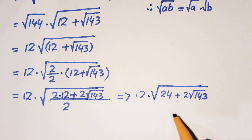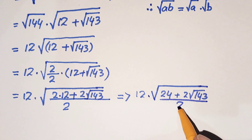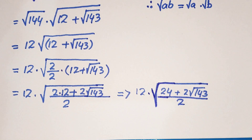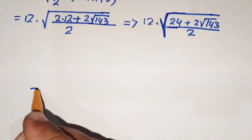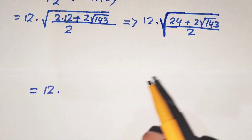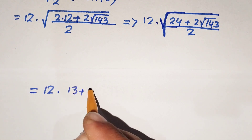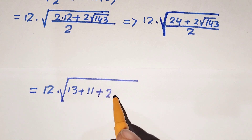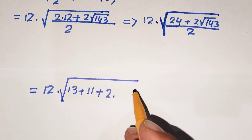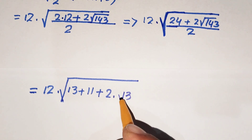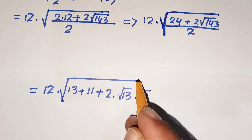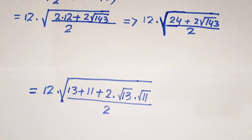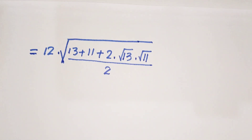Our next step: inside the square root we have 12 times — now 24 can be written as 13 plus 11, which equals 24. So we have square root of 13 plus 11 plus 2 times square root of 143. And if we write 143 as square root of 13 times square root of 11, that product equals 143. All over 2.